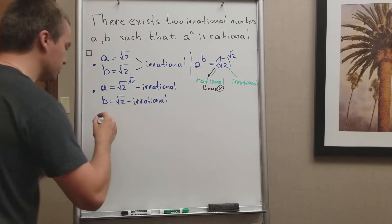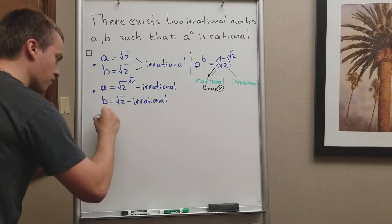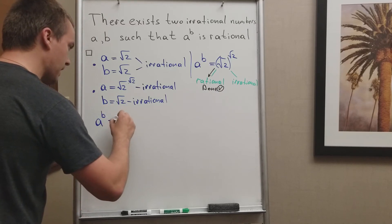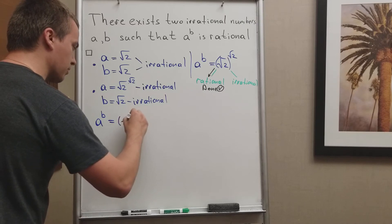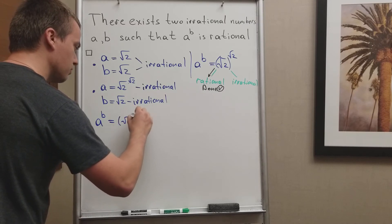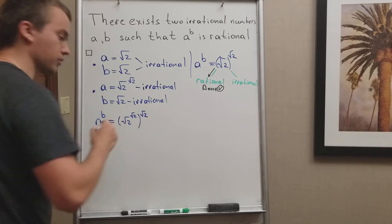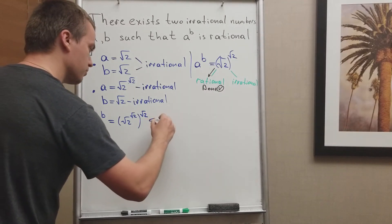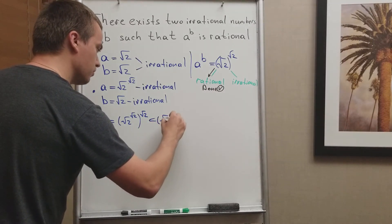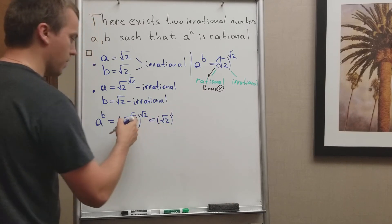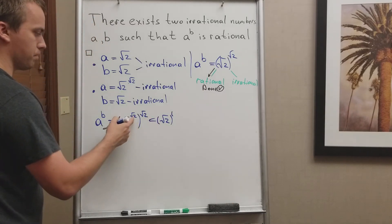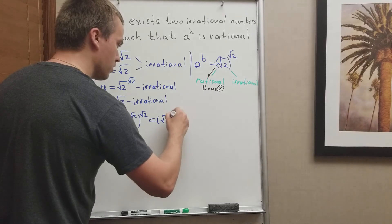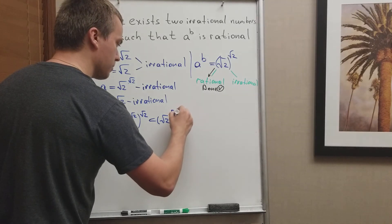Let's compute what our a to the power of b is. I will get that my a, which is square root of 2 to the power of square root of 2, raised to the power of square root of 2. By the power law, I have square root of 2 times square root of 2 in my exponent.